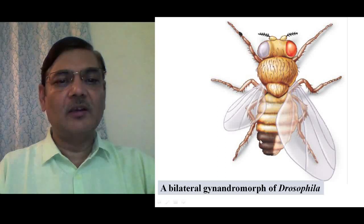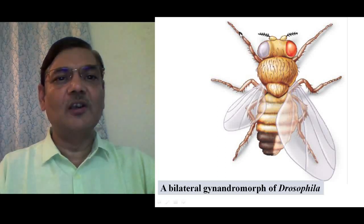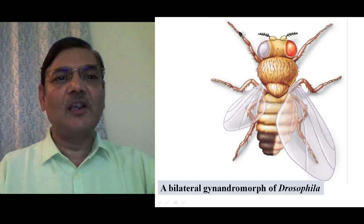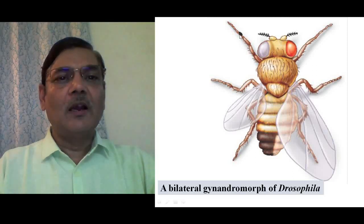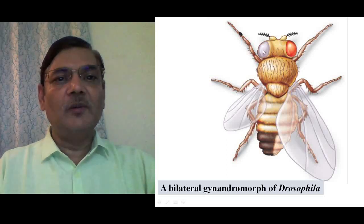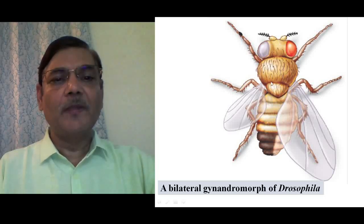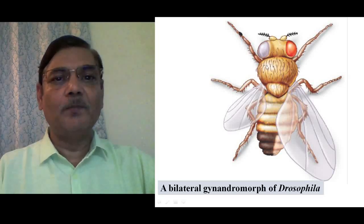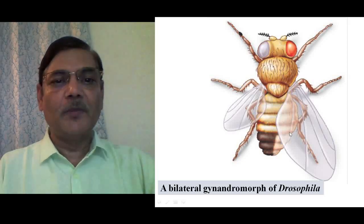The abdominal tip is black, and other features such as the sex comb are also indicative: on the right (female) side of the prothoracic leg, the sex comb is absent, which is a female feature, whereas on the male side the sex comb is present. The black abdominal tip and presence of sex comb confirm the left side is male. So the key questions are: why is one side female and the other male, why are the eye colors different on each side, and why is the male side wing miniature while the female side wing is normal?